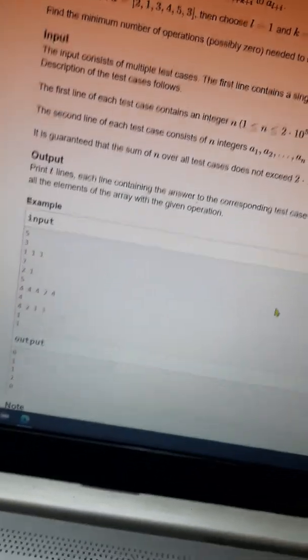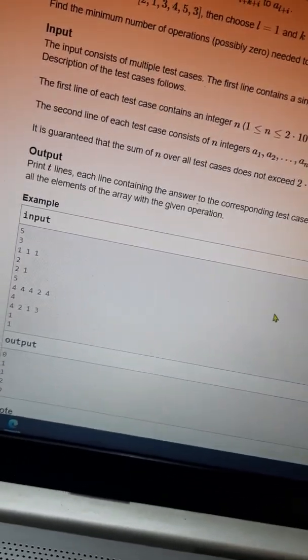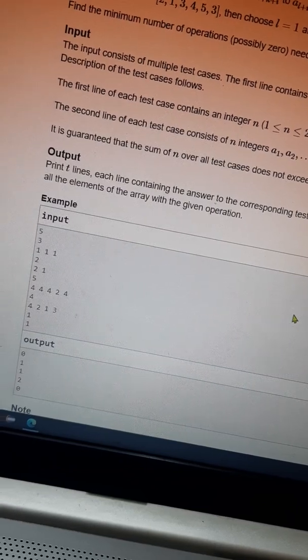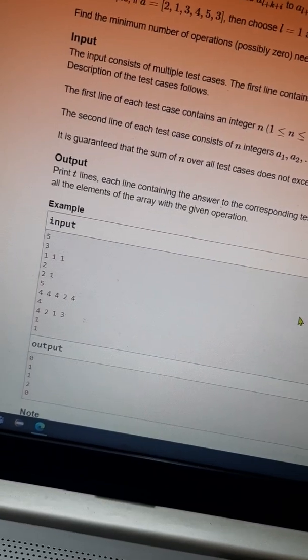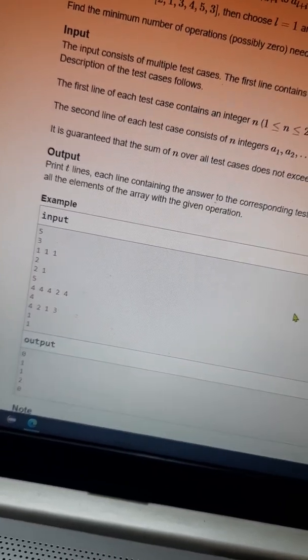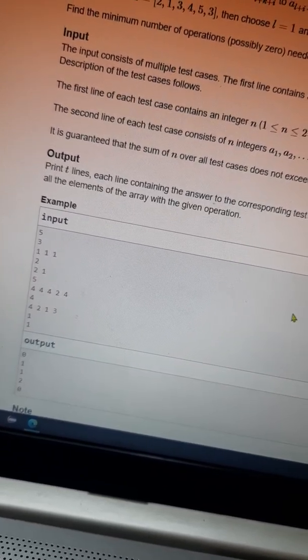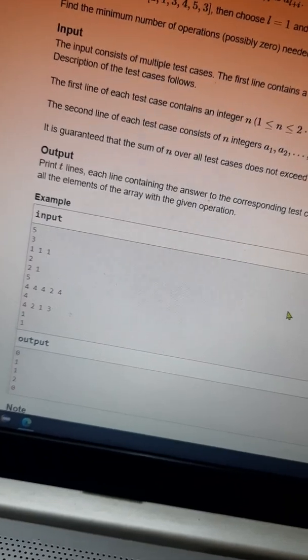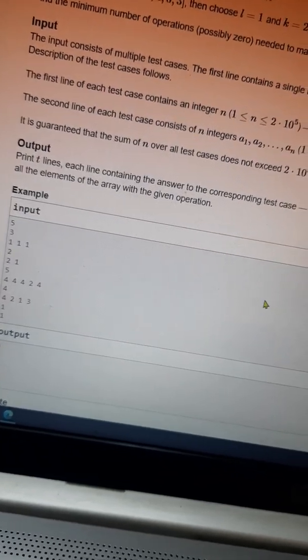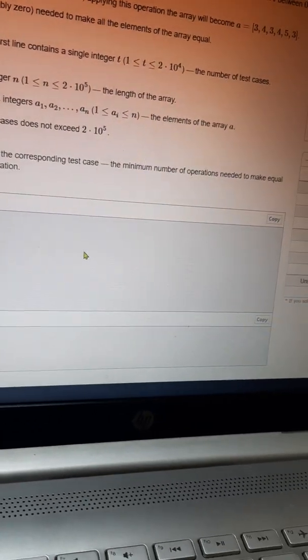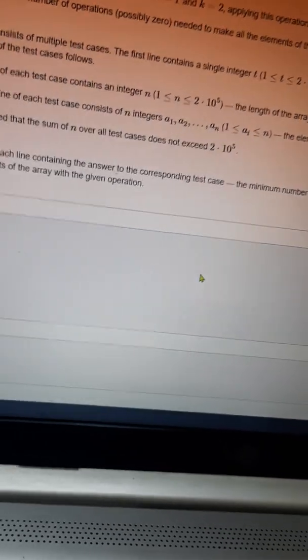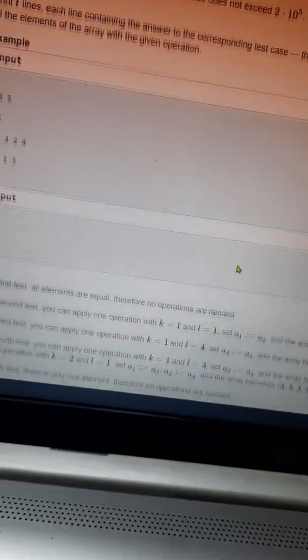The input contains: first line contains the test cases, the next line contains an integer length of the array, the next line contains the elements of the array, and so on. You should print t number of lines, each line containing the answer to the corresponding test case, that is the minimum number of operations needed to make equal all the elements of the array with a given operation. This is the input, this is output.